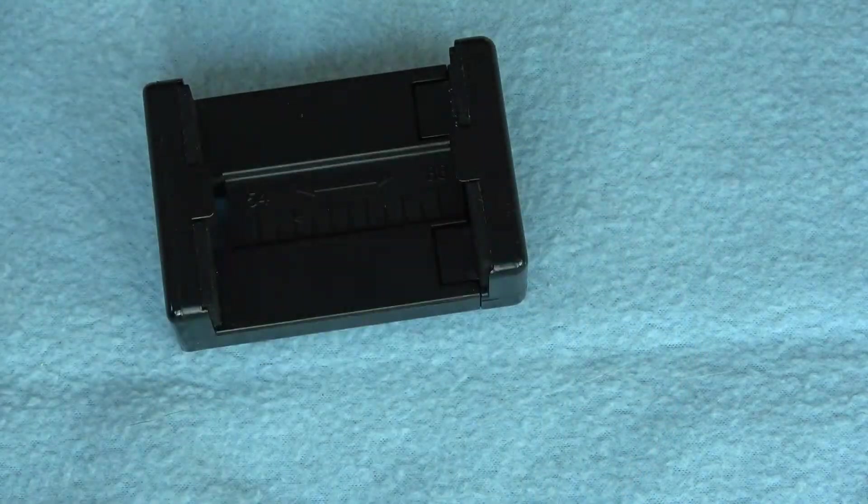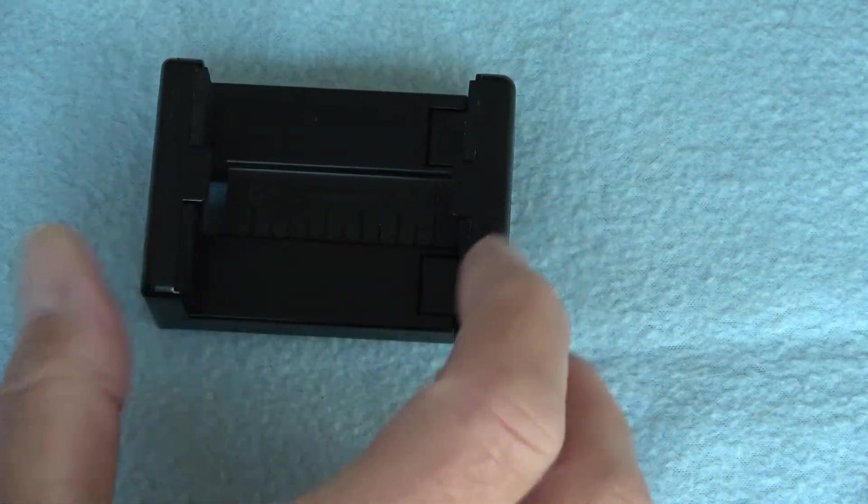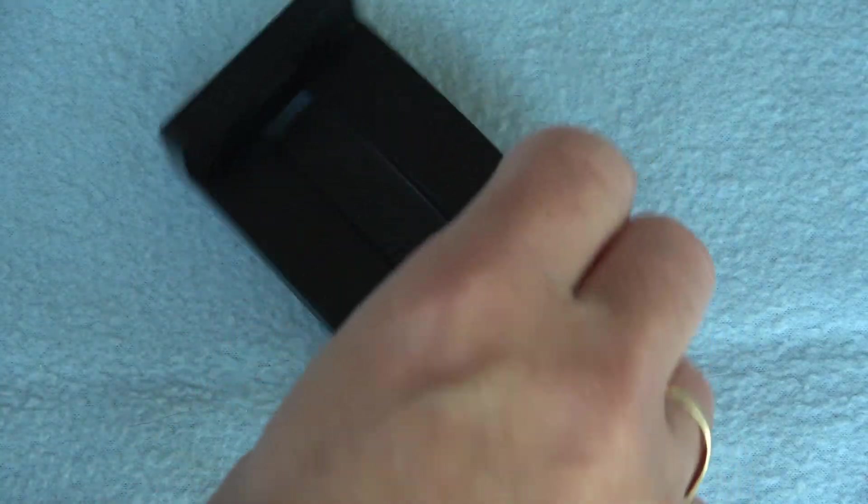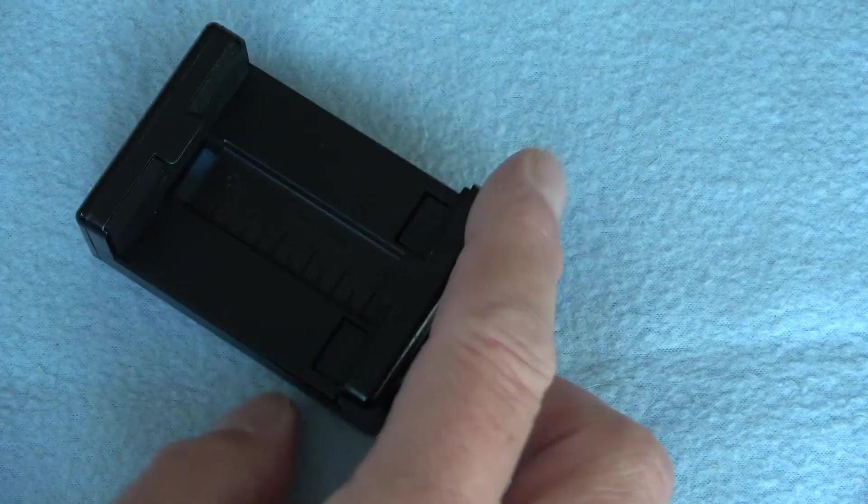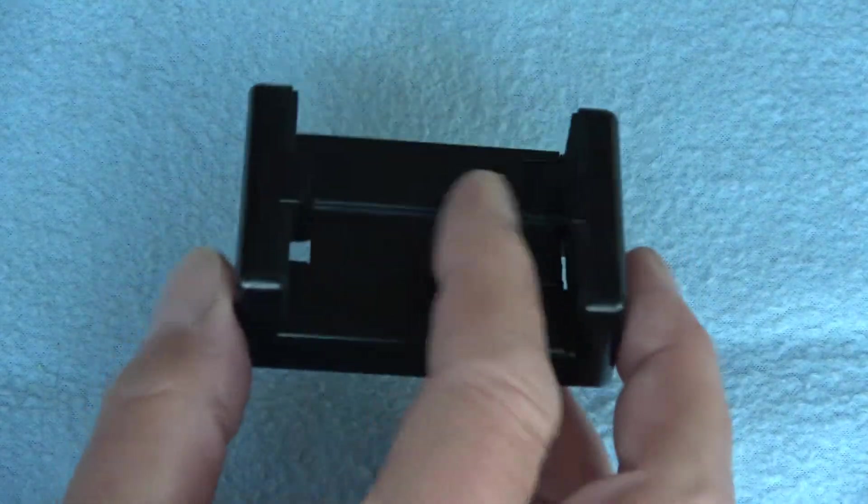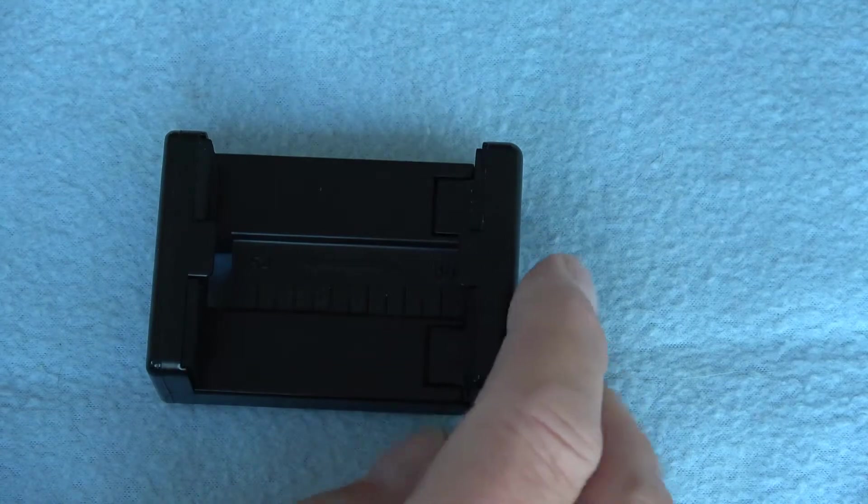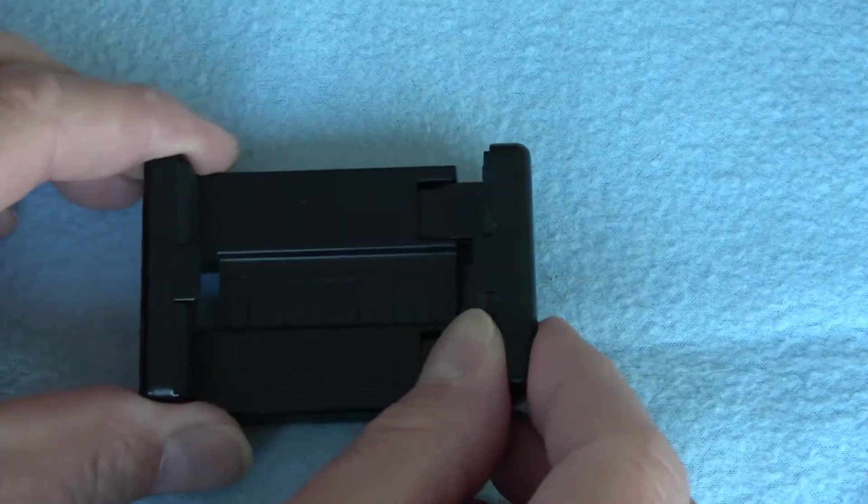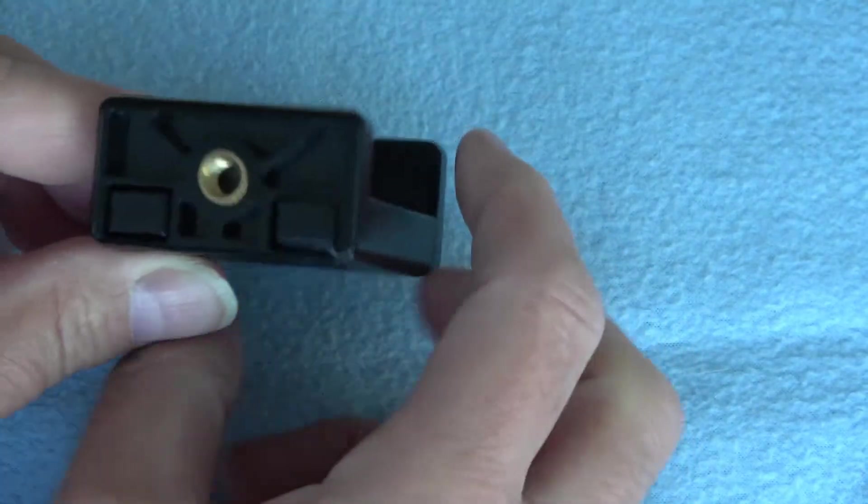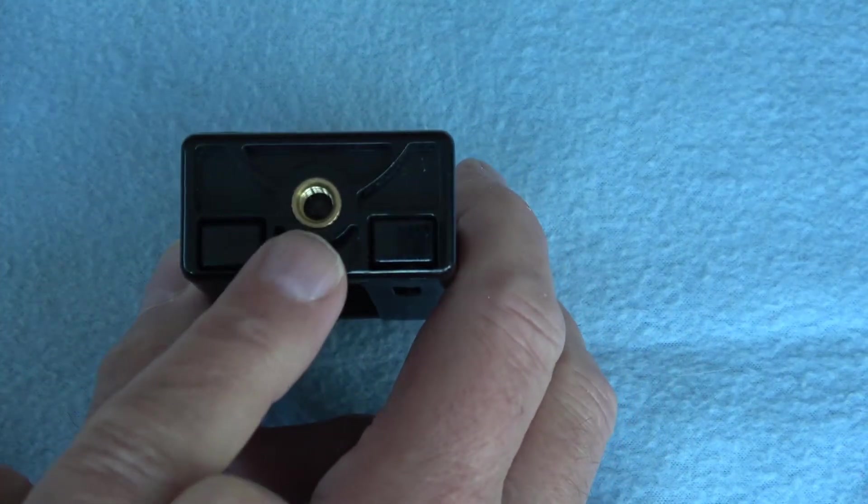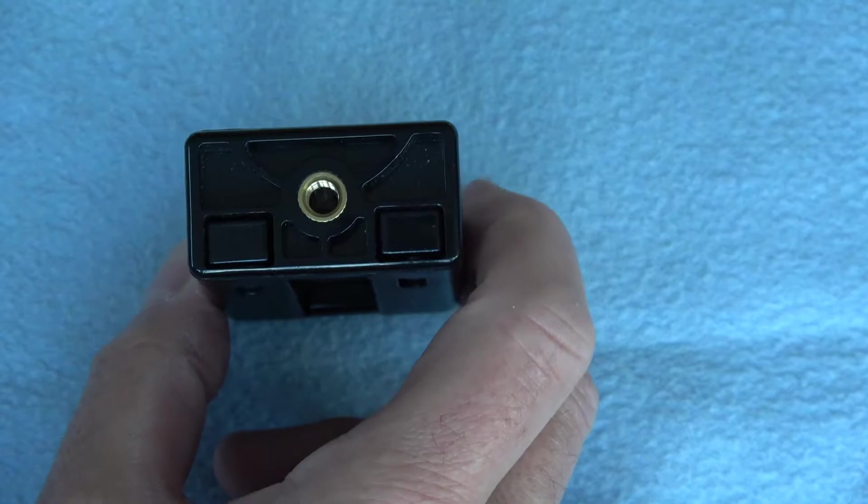Let's take a look at ingredient number two. So this is just a smartphone holder, just a normal smartphone holder. Any smartphone holder would do, this one's just a basic sort of Amazon one. It's a nice spring-loaded clamp with the standard 1/4-20 bush on the bottom.